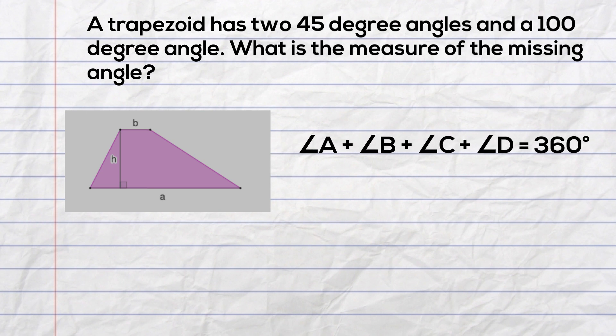I'm going to use the fact that angle A plus angle B plus angle C plus angle D all equal 360 degrees. I will plug in the numbers I know: 45, 100, 45, and the missing angle I will call x. I will set all this equal to 360 degrees.